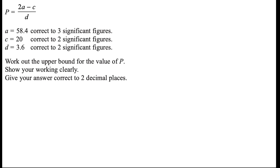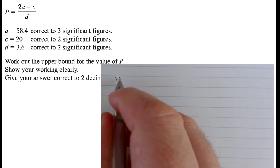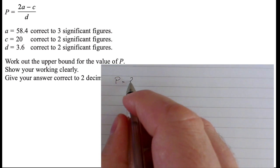So we've got a bounds question, and they want the upper bound for P. So that P looks like a fraction. So to make a fraction as big as possible, we want a large numerator and a tiny denominator, don't we?